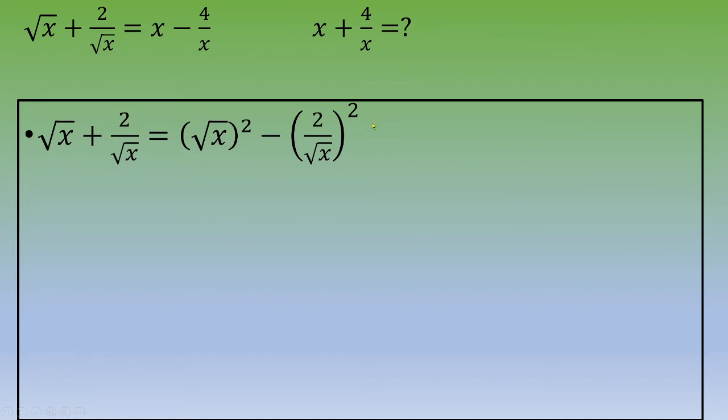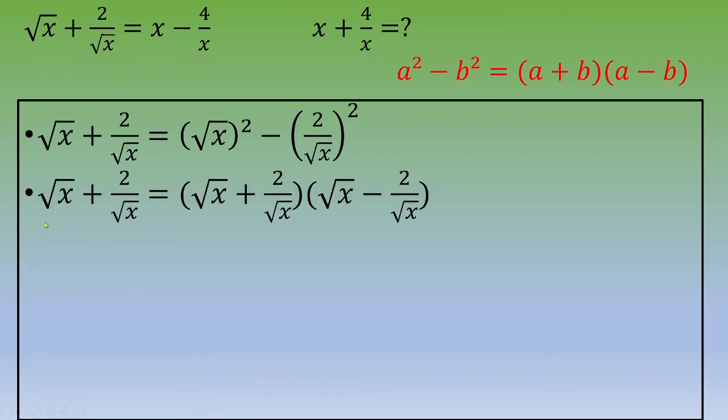This time on the right-hand side, you can recognize a remarkable identity, which is a squared minus b squared equals a plus b times a minus b.